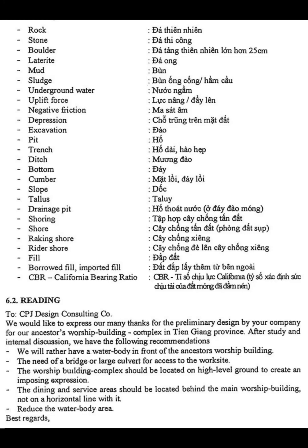We would rather have a water body in front of the Ancestors' Worship building. There is a need of a bridge or large culvert for access to the worksite. The Worship building complex should be located on high-level ground to create an imposing expression. The dining and service areas should be located behind the main Worship building, not on a horizontal line with it. Reduce the water body area. Best regards.